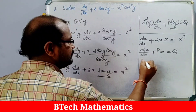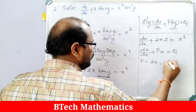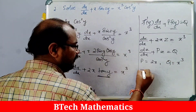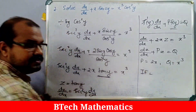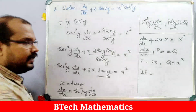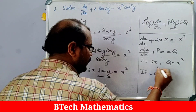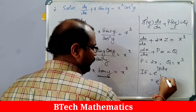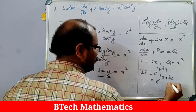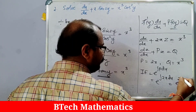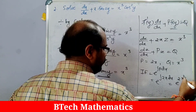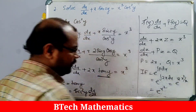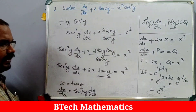The integrating factor is e^(∫P dx) = e^(∫2x dx) = e^(2·x²/2) = e^(x²). Cancelling the 2s, we get integrating factor = e^(x²).